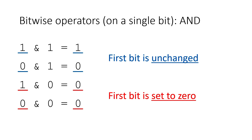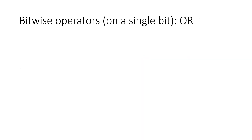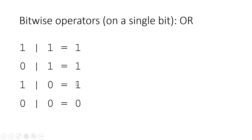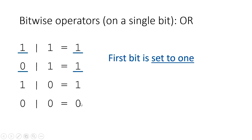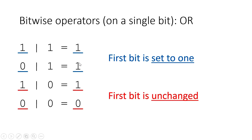Now let's look at the bitwise OR operator on a single bit. One OR one is one. Zero OR one is one. One OR zero is one. Zero OR zero is zero. So when you OR a bit with one, the output is always one regardless of what you started with. When you OR a bit with zero, the first bit is unchanged — a one stays a one, and a zero stays a zero.